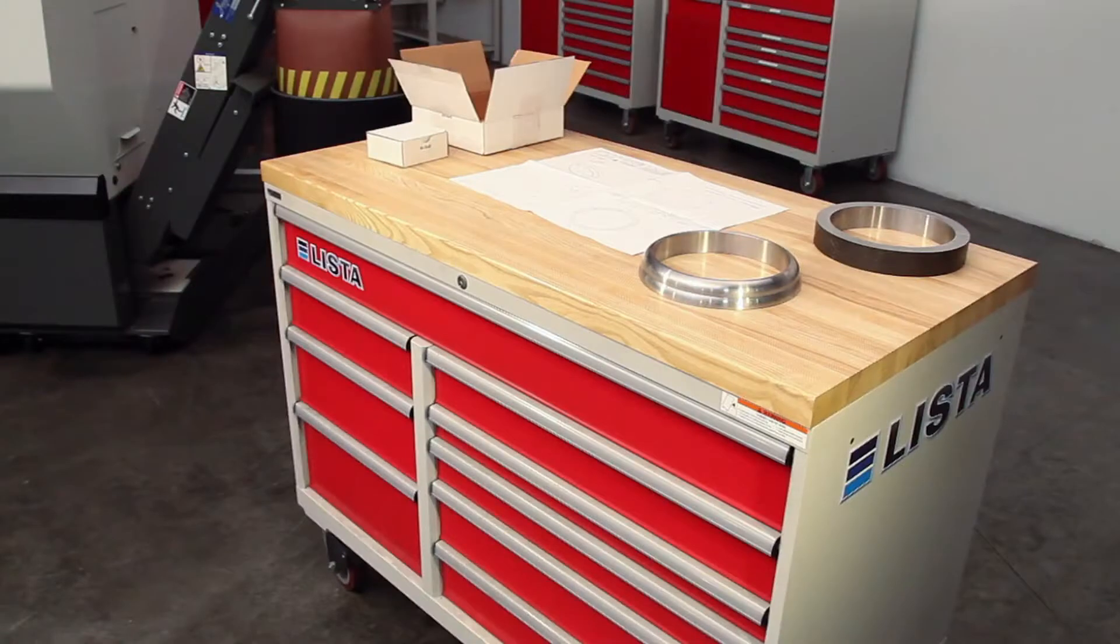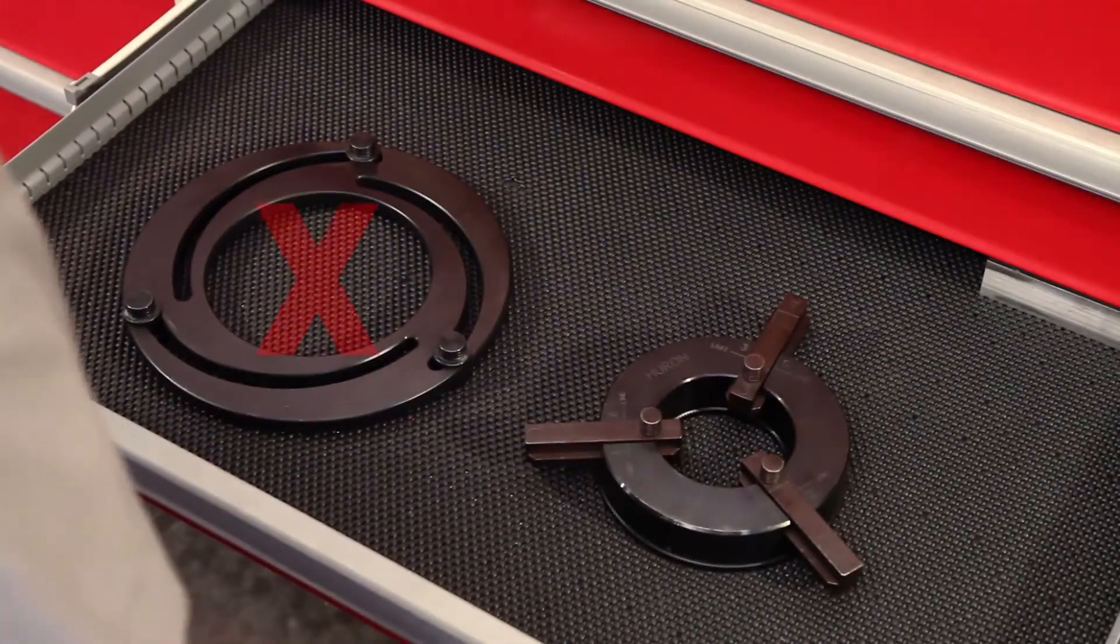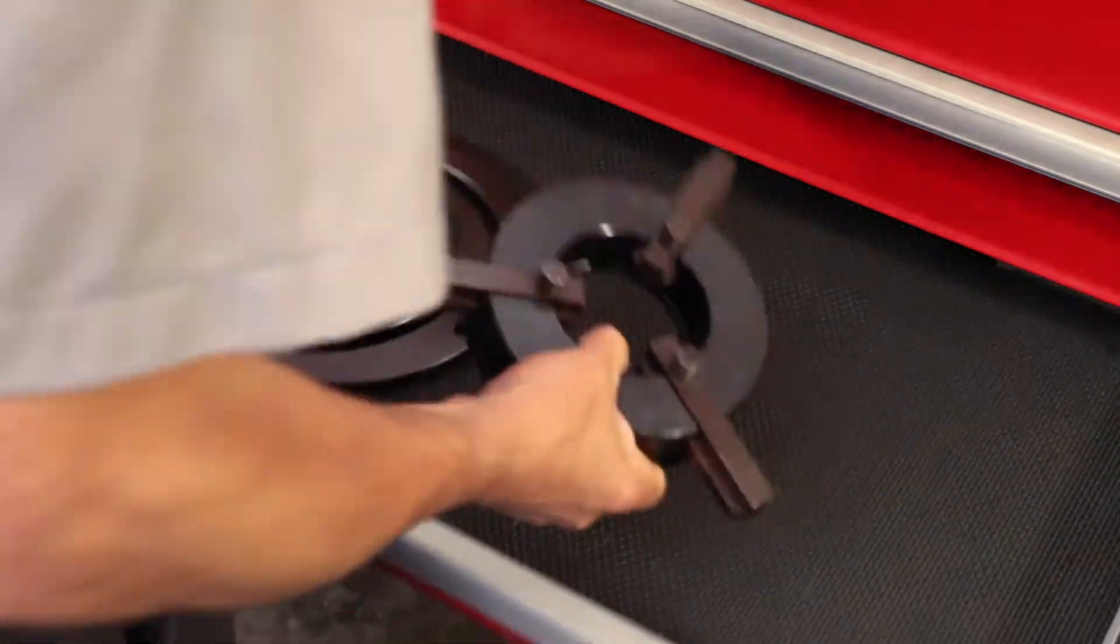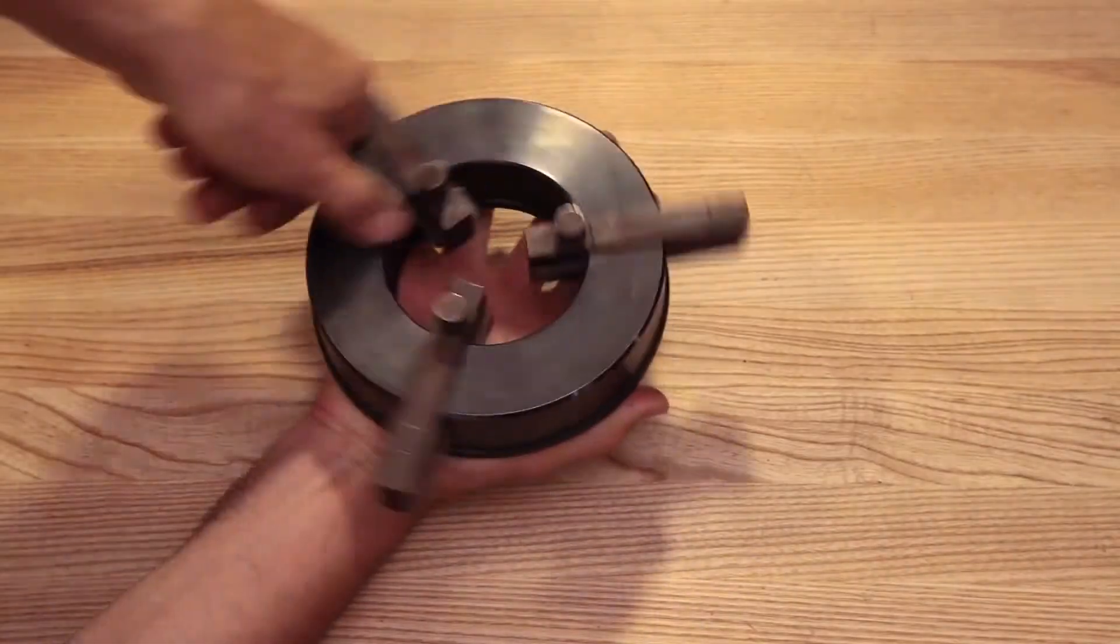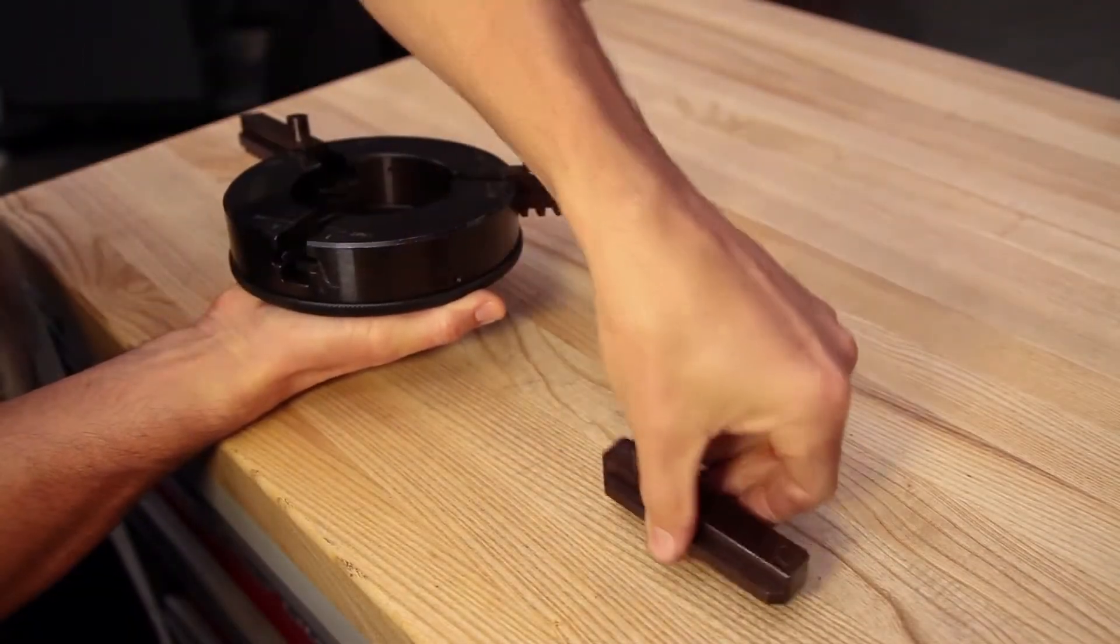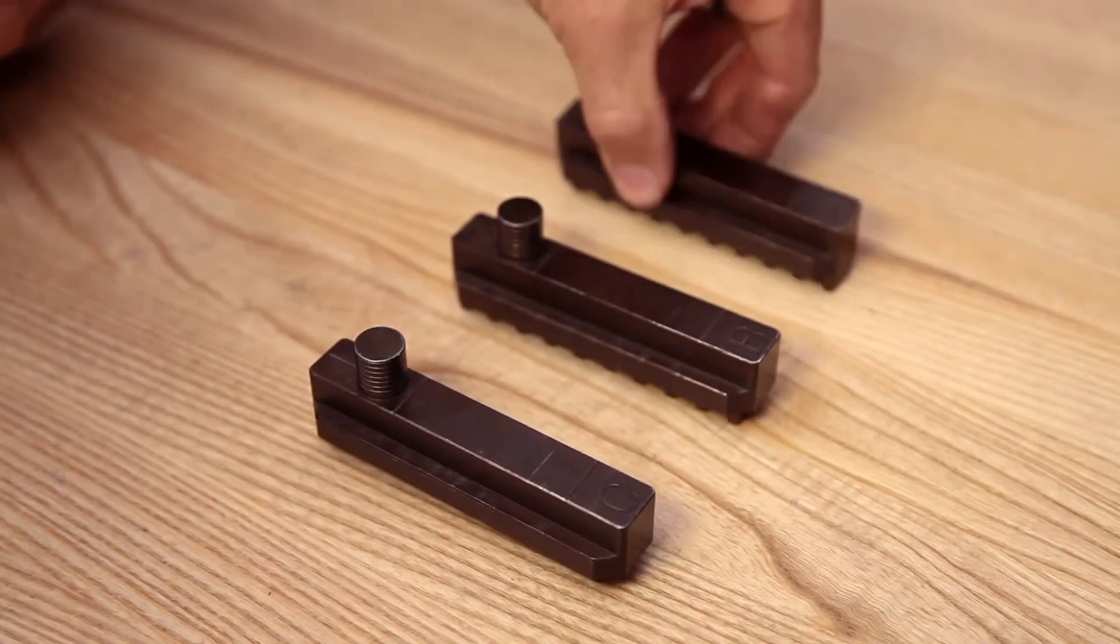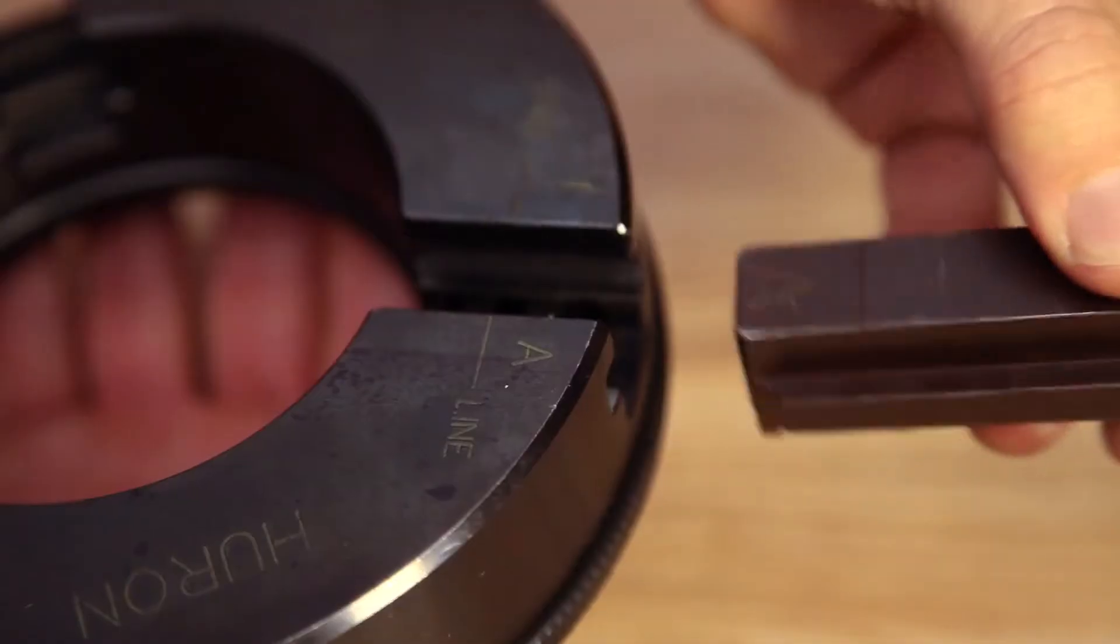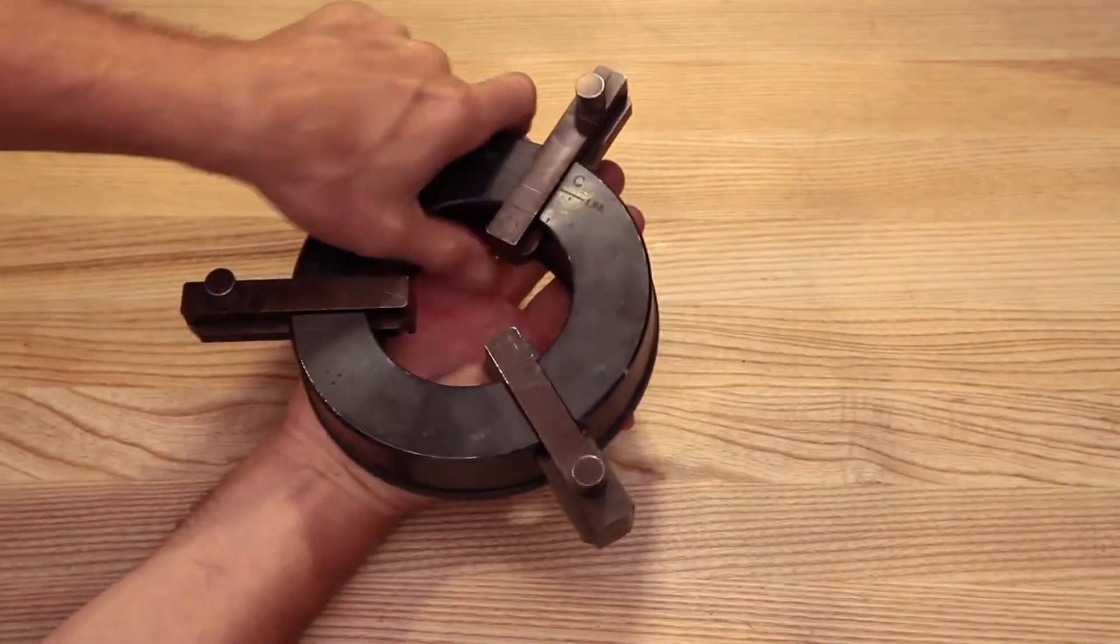Since we'll be using these pie jaws to hold a large ID part, we can't use this style of boring ring since it will block the cutting path. Instead, Andrew will use this style of boring ring. Spinning the boring ring counterclockwise moves the three threaded grippers outward so they can be removed. Andrew flips them around and inserts them back in the body, matching the letters on the grippers to the correct letters on the slots. The jaw grippers are now facing outward.